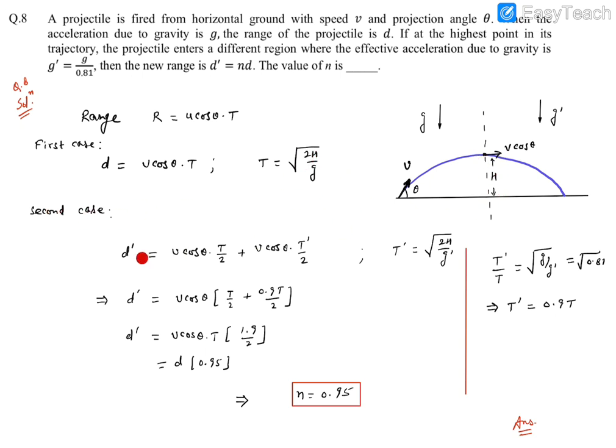Now, for the second case, we need to find range d prime. So this d prime will consist of two parts. This is first, which is going to be basically d by 2, and this is second, which we need to find out.